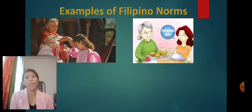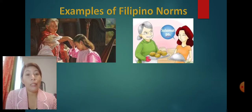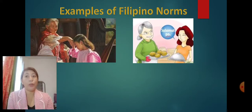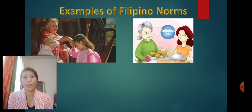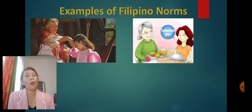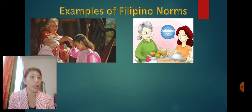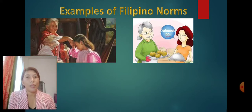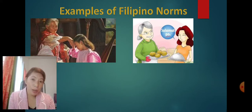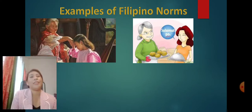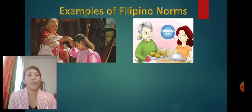Another Filipino norm is the saying of po and opo. In line with the Philippine custom of respecting the elderly, we always say po in our sentences. For example, as shown in the picture, salamat po — meaning thank you — or kumaain na po ba kayo. So that's another example of a Filipino norm.